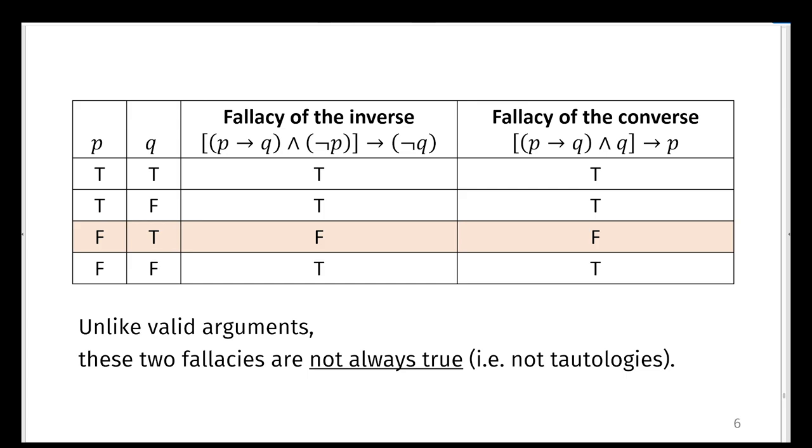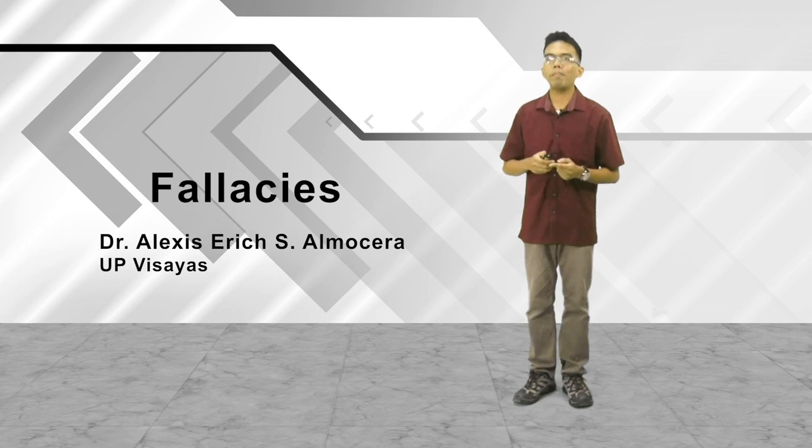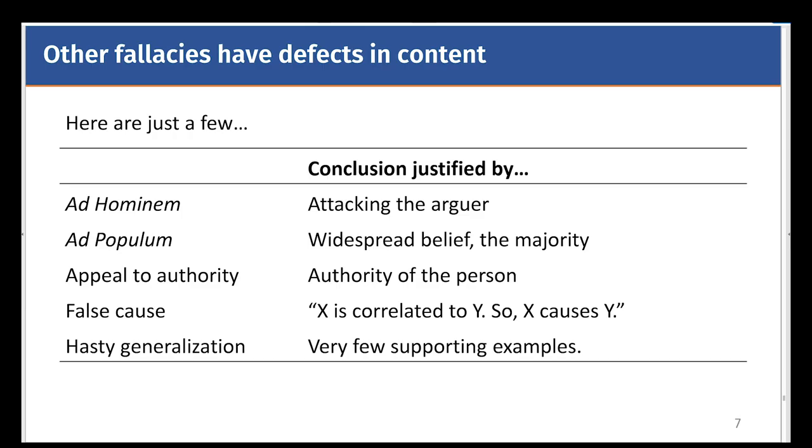And that is just the tip of the iceberg. There are many other fallacies that have defects in content, even though there may not be a problem with the logical structure. For example, the fallacy argumentum ad hominem has its conclusion justified by attacking the arguer, whether through its character or its personality.